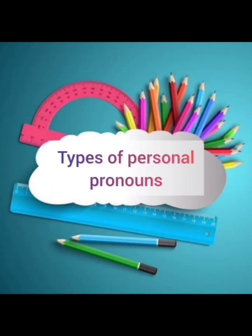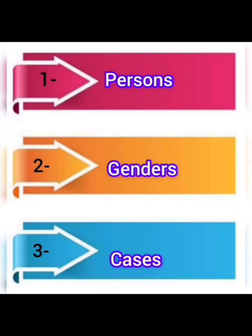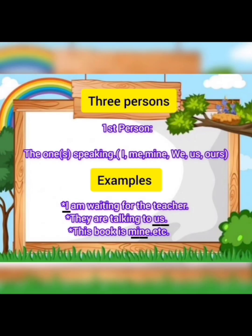Now it's time for types of personal pronouns. We have further different types: persons, genders, and cases. We have three person pronouns. First person pronouns are the one speaking — I, me, mine, we, us, ours. For example: 'I am waiting for the teacher' — I is first person. 'They are talking to us' — us is first person. 'This book is mine' — mine is first person pronoun.